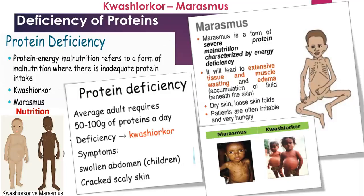In kwashiorkor, the child is thin and shows stunted physical and mental growth. The face is swollen and there is discoloration of hair. Also the skin looks pigmented, rough, and patchy. Marasmus occurs due to deficiency of both protein and carbohydrates. It is common in children below 1 year of age due to stoppage or replacement of mother's milk with poor diet. Symptoms include retarded physical and mental growth, very thin and shriveled appearance, dry and wrinkled skin, and repeated diarrhea.